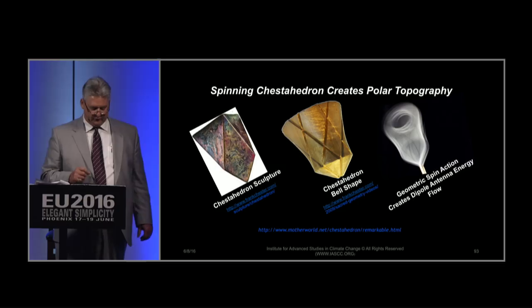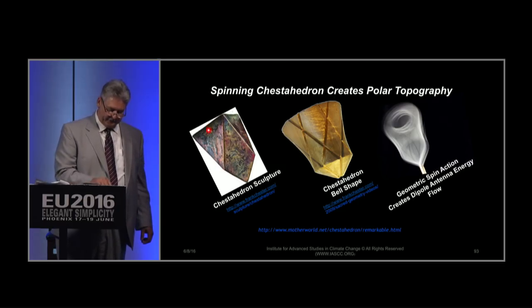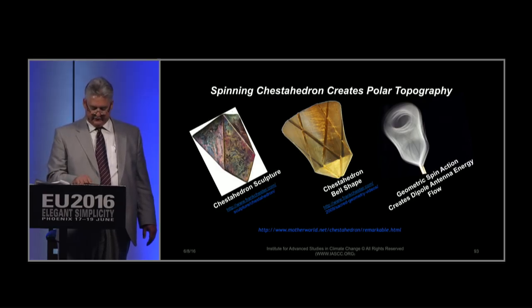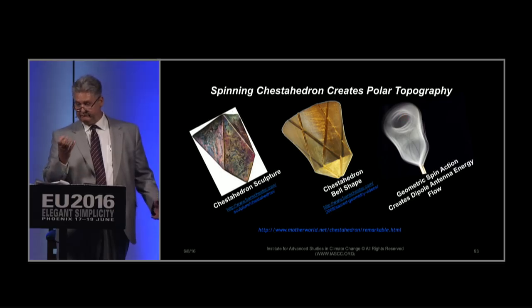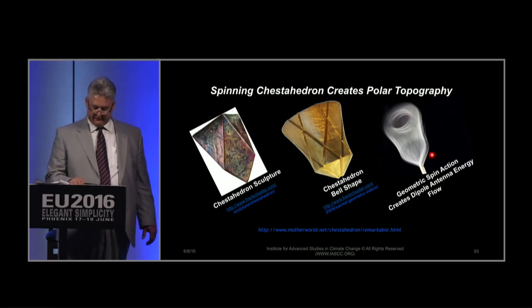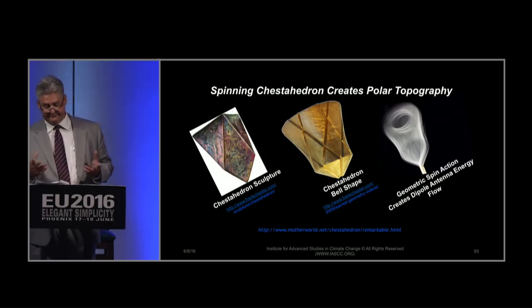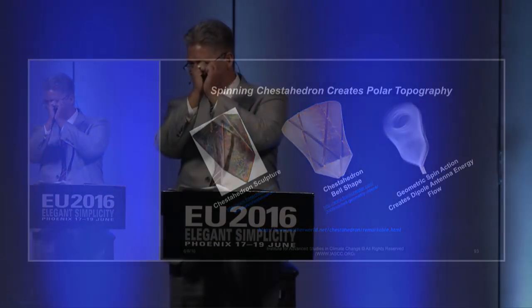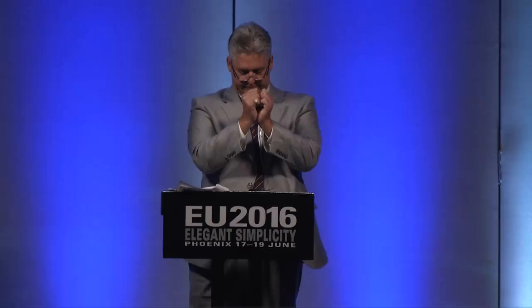I'm going to review the geometry a little bit more. There's your chestahedron sculpture. If you spin this, you get this bell shape. You can see that it creates a hole or a dimple or a vortex well on this end, and again you have your tip here. So the spinning chestahedron creates your polar topography. That's what we're looking at — those relationships. Frank Chester does a much better job of explaining the relationships to the human heart.